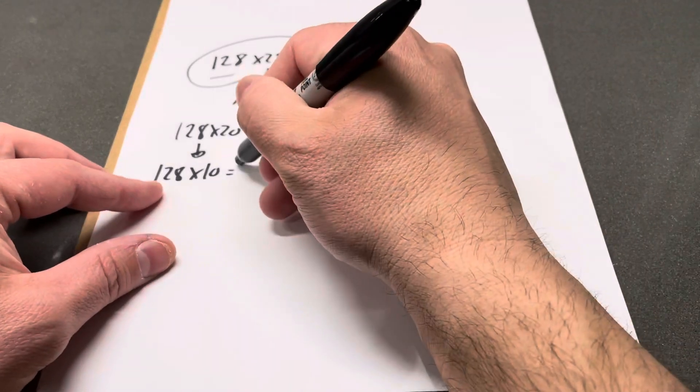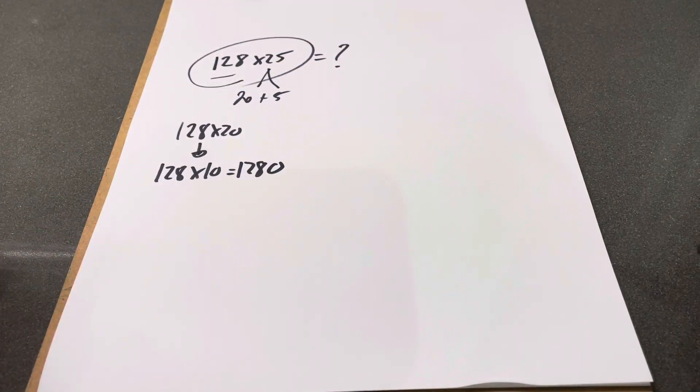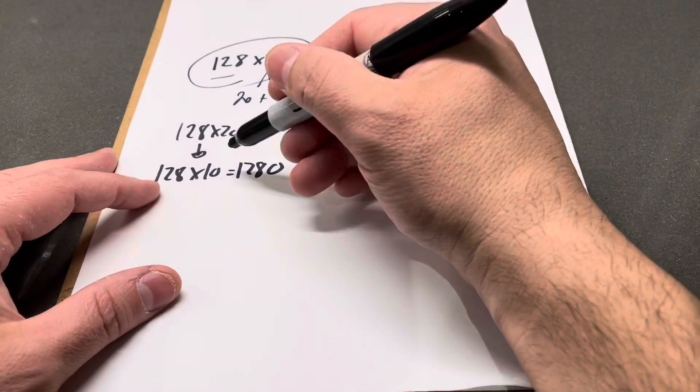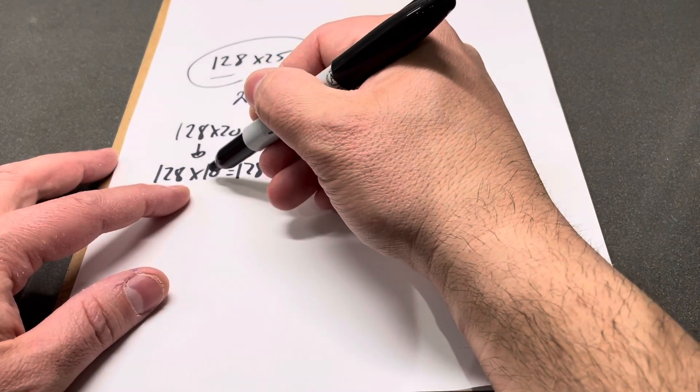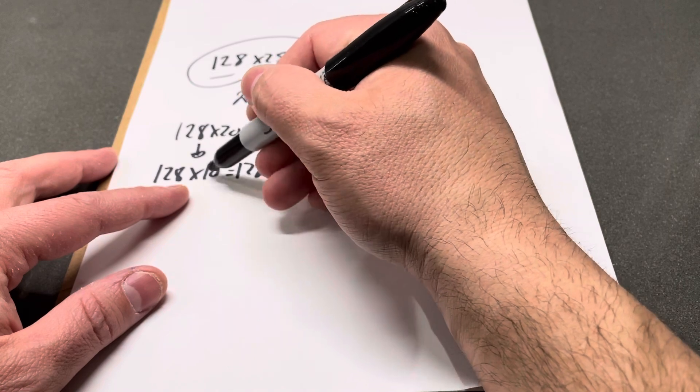So it's 1280. This is 128 times 10. In order to get from 10 to 20, you need to double that number.